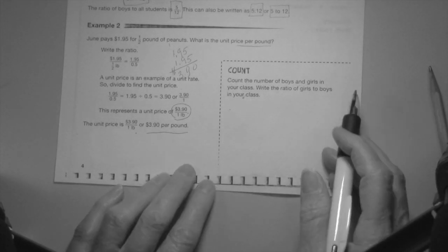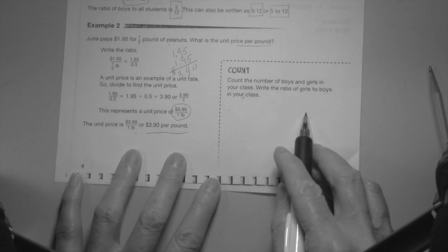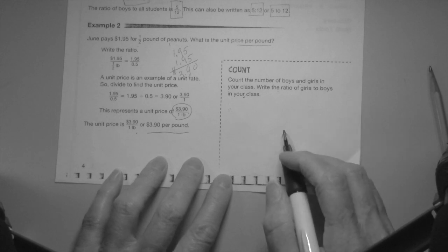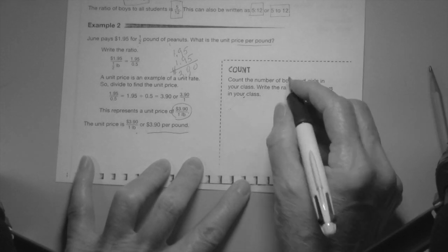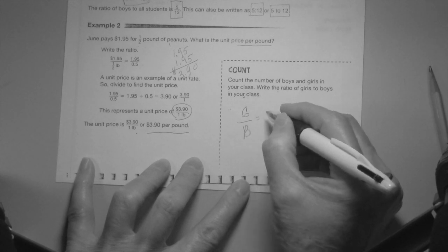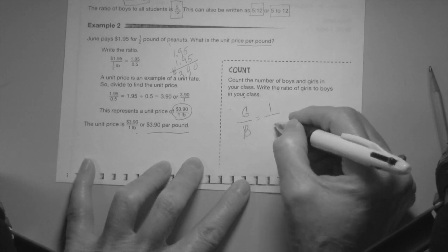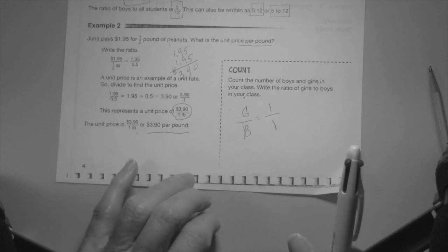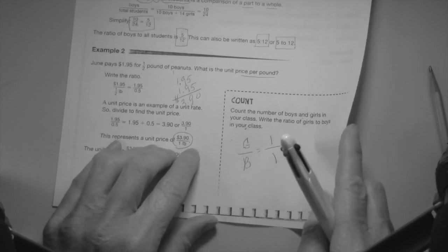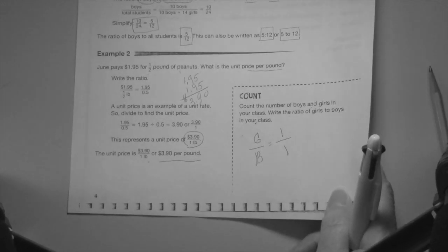Count the number of boys and girls in your class and write a ratio of boys and girls to your class. Well, since we are home and I don't know what your class is, my class right now is me and Marley. It's a girl and a boy, Marley's a boy, so it's girls to boys, meaning me is one girl to one boy, so it's one to one in my studio room here.